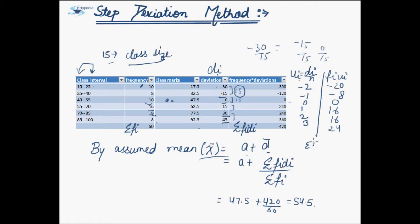Now, let us calculate summation fi*ui. The negative values are minus 20 plus minus 8, that is minus 28. Then we have 0. And for the positive values we have 16 plus 16 plus 24. So summation fi*ui comes out to be 28.